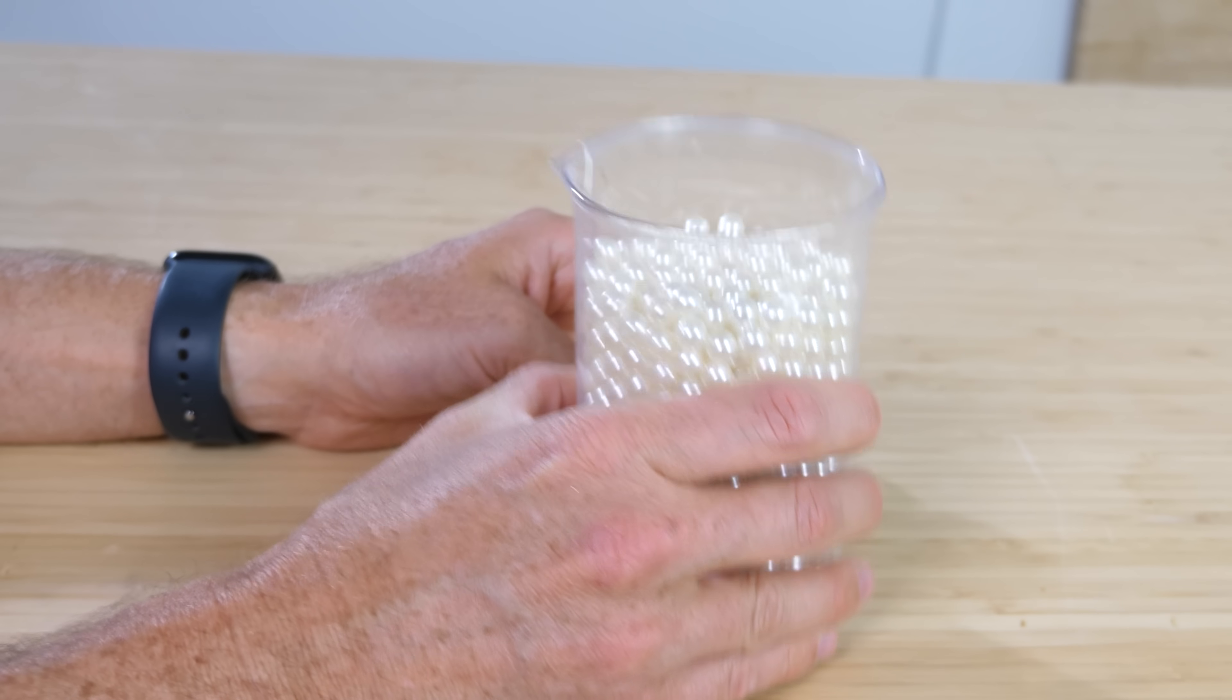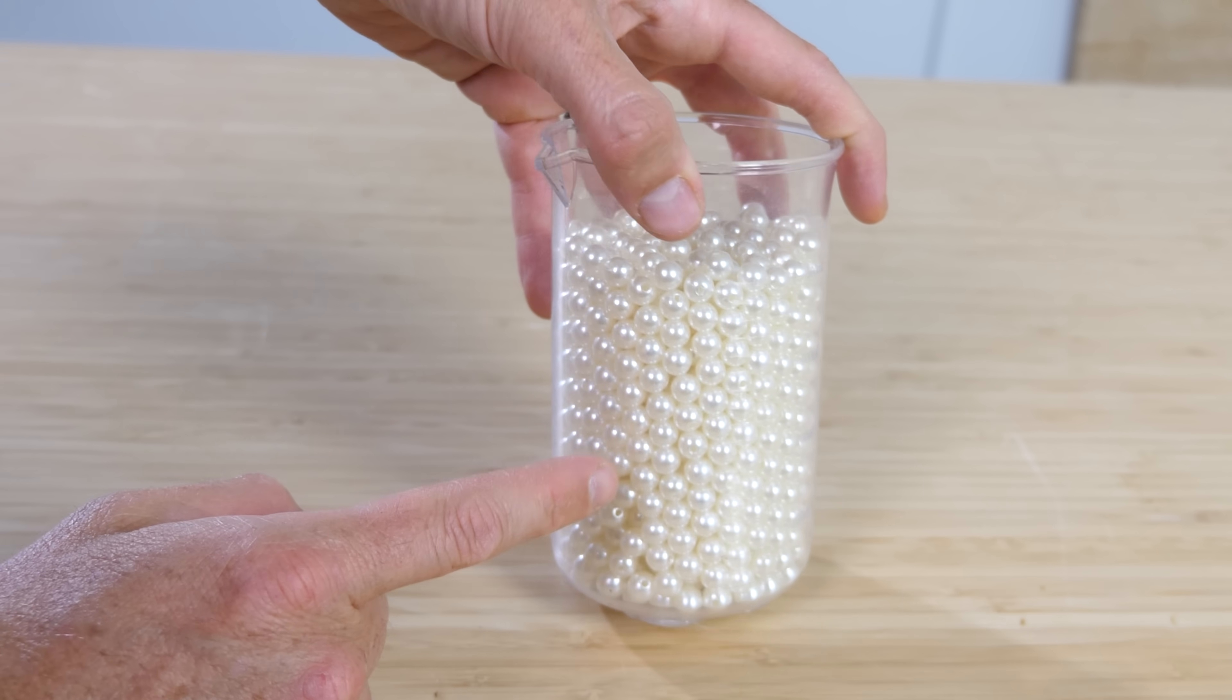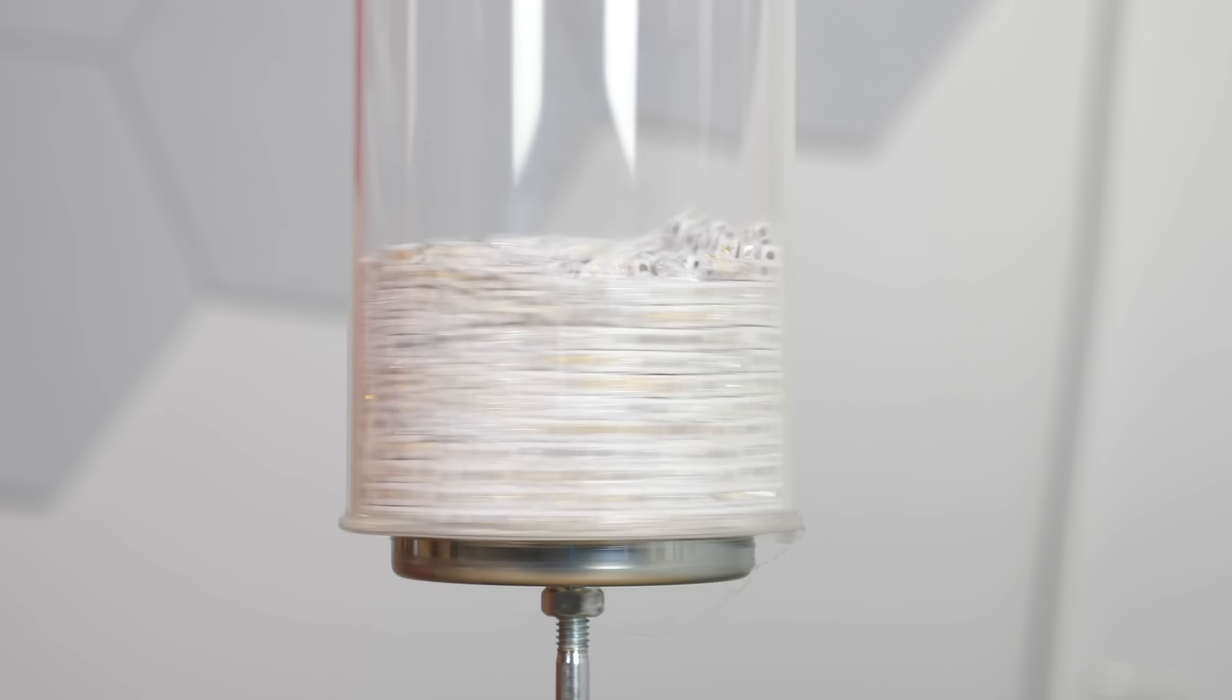Shake a bunch of hard spheres and they'll organize into a face-centered cubic pattern. All hard particles will tend to spontaneously organize themselves. It seems like there's some force making these shapes align in a certain way. But why?